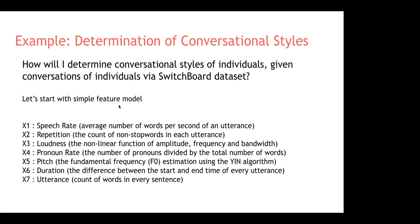There are multiple features I extracted to determine conversational styles. Speech rate is the average number of words per second in an utterance — utterance being the wave file audio sample with a start and end time. Repetition is the count of non-stop words; stop words are frequently used punctuation or common words. Loudness is a non-linear function of amplitude, frequency, and bandwidth. Ruby has libraries available to extract all these features.